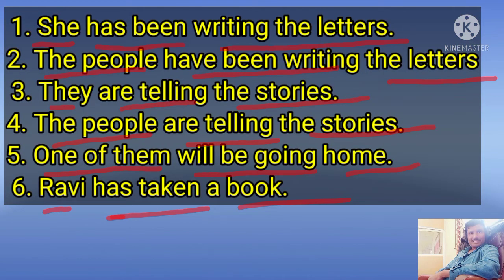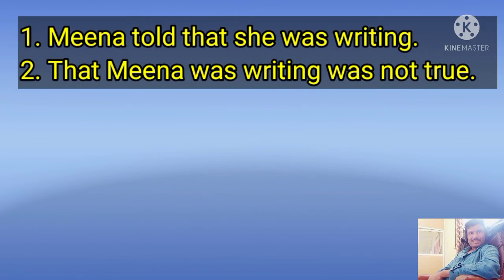Examples of S-V-O: 'She has been writing the letters.' 'The people have been writing the letters.' 'They are telling the stories.' 'The people are telling the stories.' 'One of them will be going home.' 'Ravi has taken a book.' All these sentences follow the pattern subject plus verb plus object, S-V-O. Also: 'Mina told that she was writing.' 'That Mina was writing was not the truth.' In both sentences, 'that she was writing' and 'that Mina was writing' are finite noun clauses, functioning as the object and subject of these two sentences respectively.